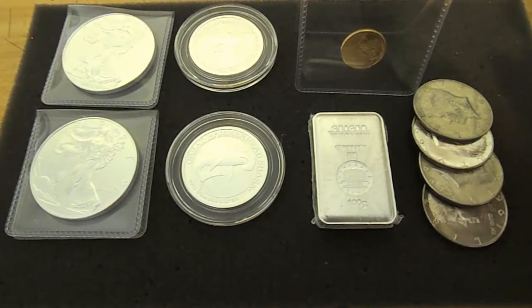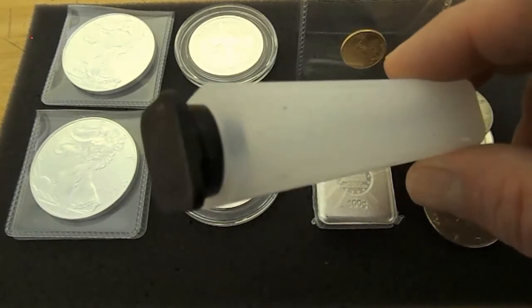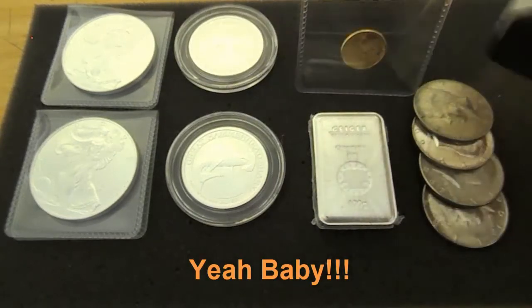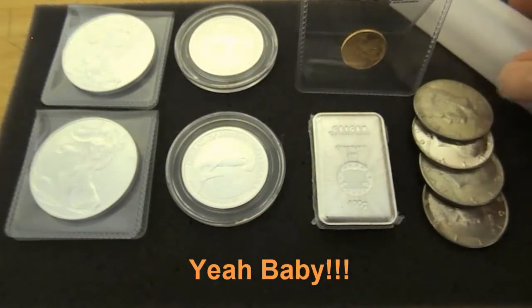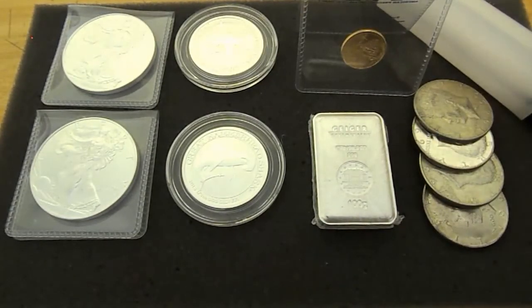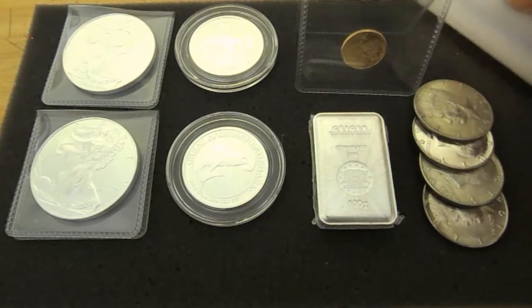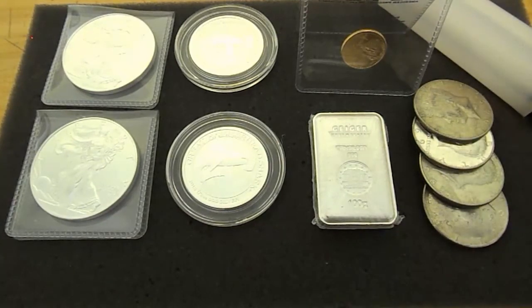I picked up a mint tube for the 1/10 oz Gold Eagles. And I am going to strive to fill that. It takes 50 of them, which would be 5 ounces. I love that fractional gold.